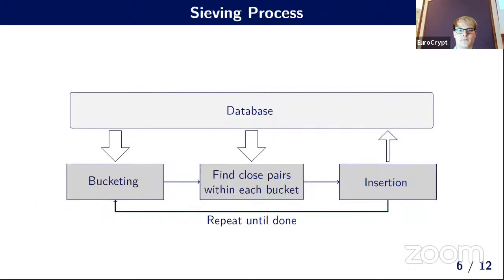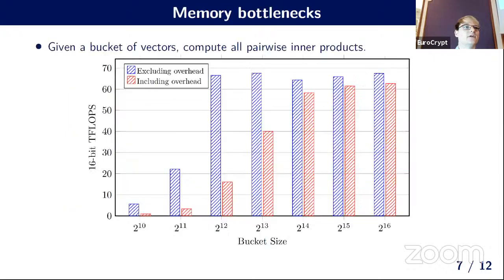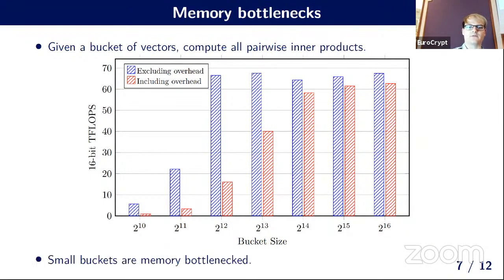For advanced sieves, the sieving process has a bucketing phase where the large list is subdivided into buckets, with vectors in each bucket expected to lie close to each other. Inside each bucket, close pairs are found and yield short vectors. To find close pairs, all pairwise inner products between vectors in a bucket are computed. For large buckets, matrix multiplication can be used efficiently, achieving over 60 teraflops per GPU. For small buckets, memory bottlenecks arise as sending vectors to the GPU takes more time than computing the inner products.